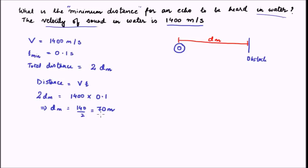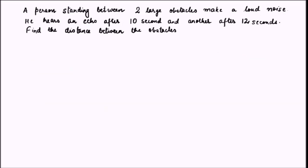This is quite large compared to what it was in air. In air it was roughly 17 meters, but here the minimum distance is 70 meters. So the obstacle should be 70 meters away from the observer for the echo to be heard. Now let us see another question. Here the question states that a person is standing between two large obstacles and he makes a loud noise. As a result, he hears two echoes — one after 10 seconds and a second after 12 seconds.